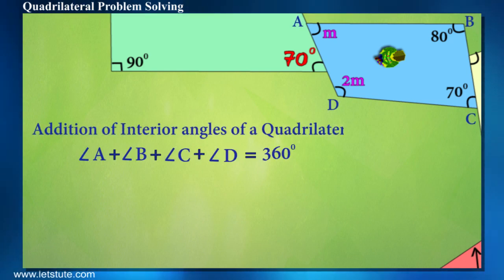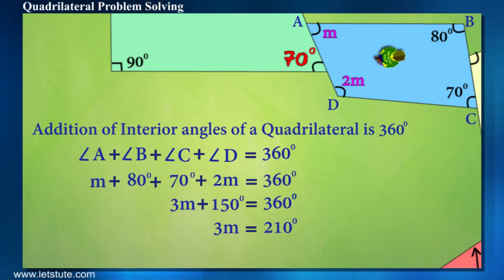Addition of all the angles are 360 degrees for all the types of quadrilaterals. Then what must be the value of M? Well, it comes out to be 70 degrees.